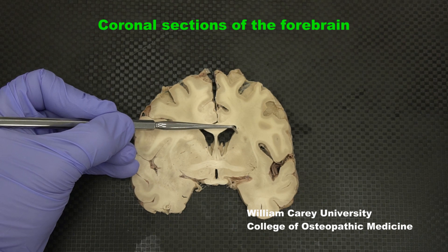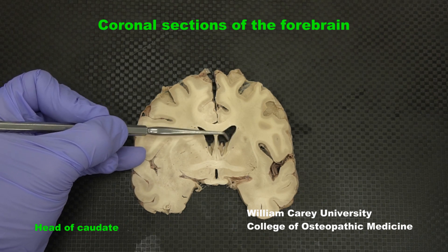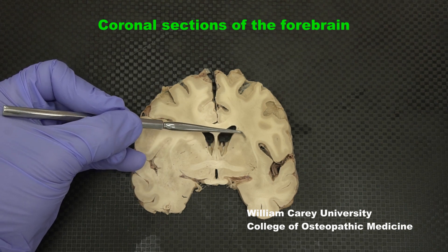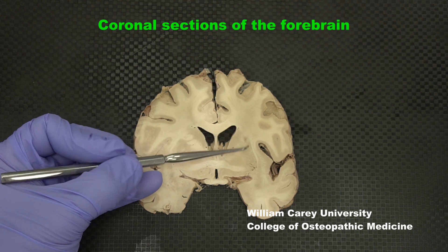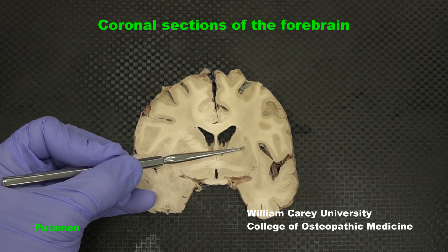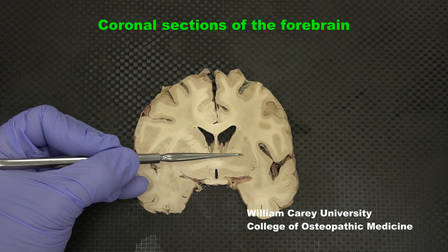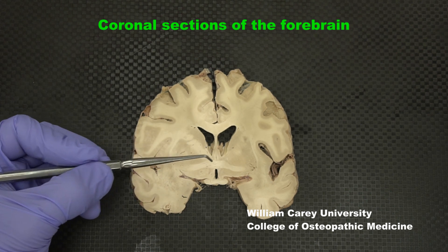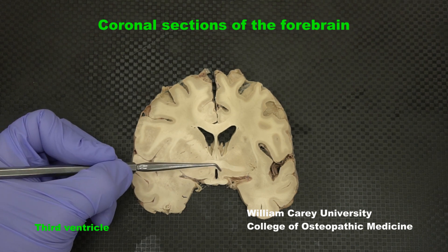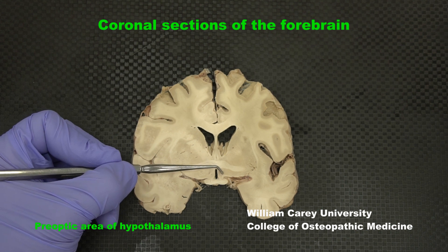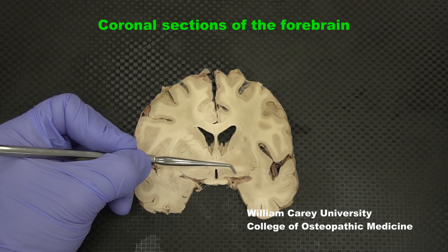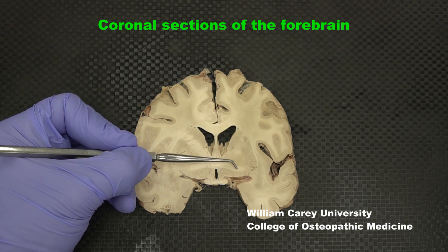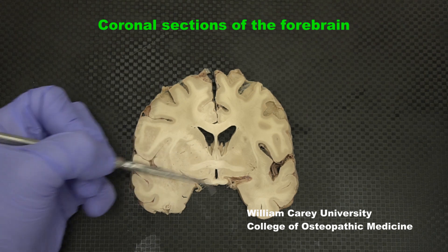This is still the head of the caudate adjacent to the anterior horn of the lateral ventricle. This is the anterior limb of the internal capsule, and lateral to it the putamen is visible. This is just the beginning of the globus pallidus. Next to the third ventricle, here is the preoptic hypothalamus, and lateral to it the ventral pallidum or substantia innominata area, just ventral to the lateral portion of the anterior commissure.